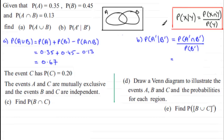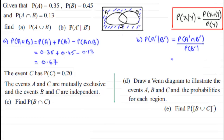From the Venn diagram: not A is the area outside A, not B is the area outside B. The region common to both — A'∩B' — is the area totally outside both A and B, which is the complement of A∪B. Since P(A∪B) = 0.67, this outside region = 0.33.